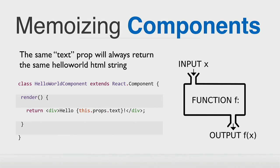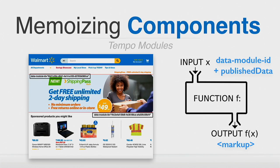Memoization is a concept from functional programming: given a certain input X, you will always get the same output. Here's a hello world component — if I pass in the text 'world', I will always get 'hello world' out. This is subtly different from caching: rather than a TTL, this can be cached indefinitely because given that text, I always get the same output. This was great for us at Walmart because we have a unique identifier for every piece of content on the page. Given that content ID, I can always know exactly what the markup will be. If the configuration behind the content changes, we get a new ID.